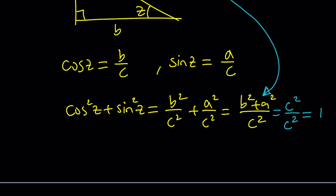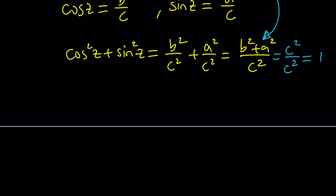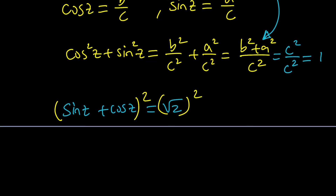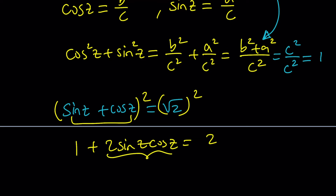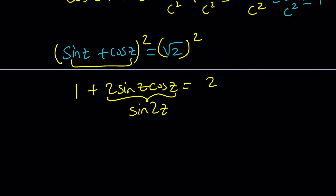For example, they'll sometimes give you: sine z plus cosine z equals square root of 2. One of the easiest ways to handle this is to square both sides and take advantage of the fact that sine squared plus cosine squared equals 1, because the rest becomes a double angle formula. When you square and simplify, this gives you the sine of 2z. Just be careful — squaring both sides can introduce extraneous solutions that aren't solutions to the original equation.